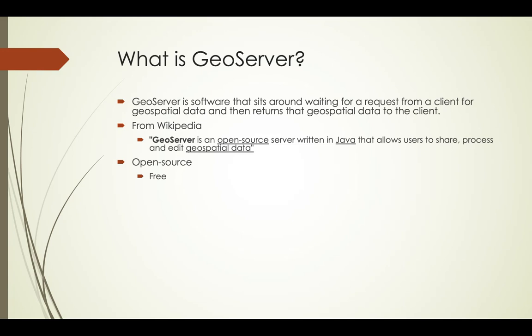You can just download it and install it on your local machine, like we'll do for this class, or install it on your own computer and set it to be accessible to the outside world. Or you may just want to pay someone else a monthly fee to use GeoServer hosted on their computer systems. That's also a possibility that we'll talk about. But more importantly, open-source means that the source code is accessible, and if you wanted, you could modify the source code to fix a bug or add some functionality that you need.